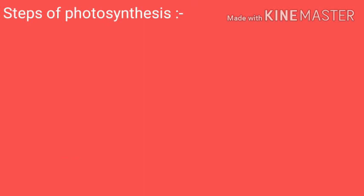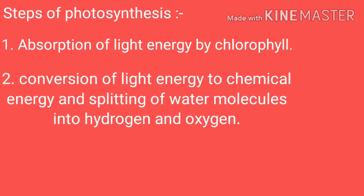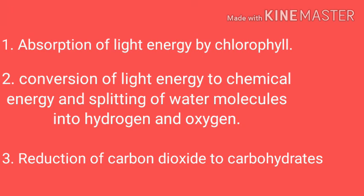The steps of photosynthesis are: first, absorption of light energy by chlorophyll; second, conversion of light energy into chemical energy by splitting of water molecules into hydrogen and oxygen; and third, reduction of carbon dioxide to carbohydrates.